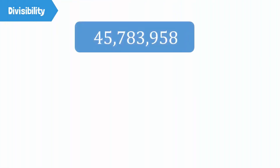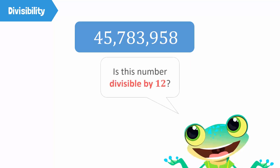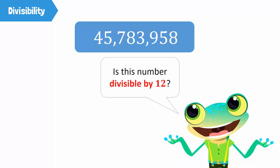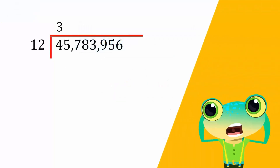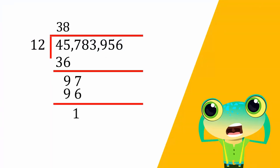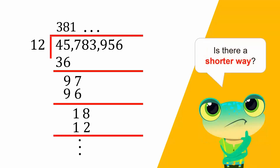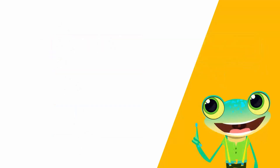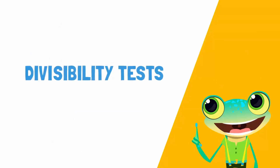Look at this number: 45,783,958. Can you tell in one quick glance if this number is divisible by 12? We can obviously perform division and know for sure, but is there a shorter way? Yes, there is! With the use of divisibility tests, we can quickly find out whether a number is divisible by another number or not.